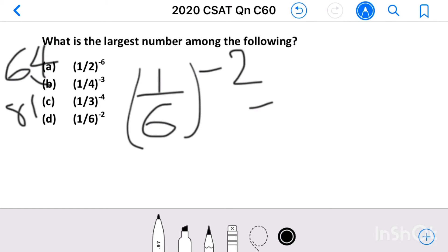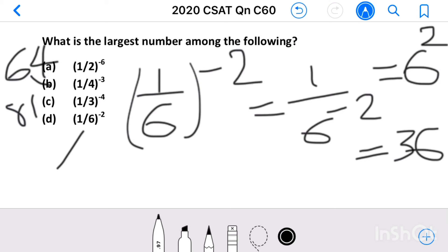This is equal to 1 by 6 raised to minus 2 equals 6 square equals 36. So the largest value among these equals 81. It is option c, 1 by 3 all raised to minus 4. Our answer is option c.